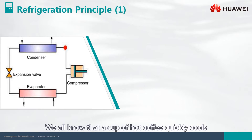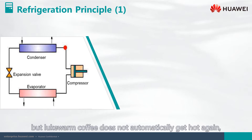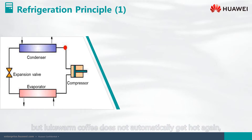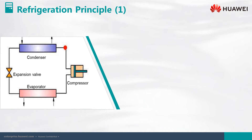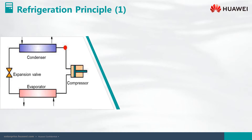We all know that a cup of hot coffee quickly cools when left at room temperature, but lukewarm coffee does not automatically get hot again, indicating a direction of heat transfer. For the same reason, heat in a room does not automatically disappear. To cool a room, we must transfer the heat outside. This is what air conditioning does.